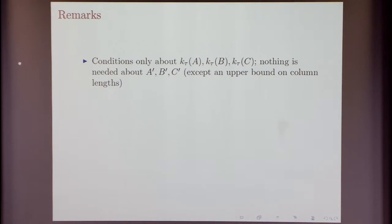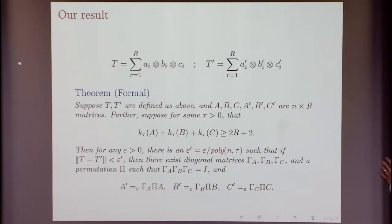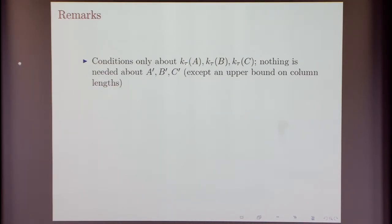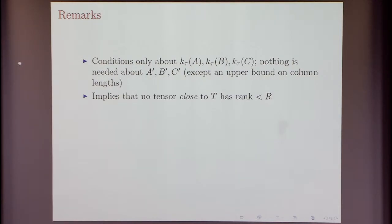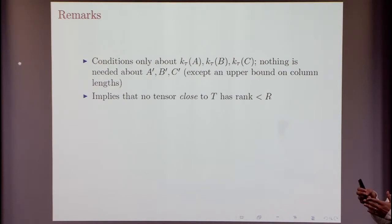Note that the conditions in this theorem are only about one of the decompositions — all our conditions are about the decomposition of T, and you don't really need anything about A', B', and C'. An interesting implication is that if you take some tensor T whose decomposition satisfies these Kruskal conditions, then any other tensor close to T cannot have rank smaller than R — because if you're close enough to T, you must have a decomposition close to its decomposition, and therefore you cannot have a smaller rank.